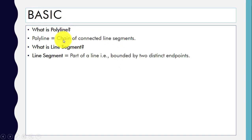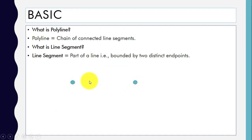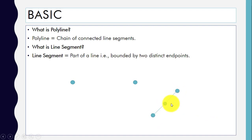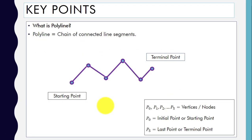First, what is a polyline? A polyline is a chain of connected line segments. A line segment is a part of a line bounded by two distinct endpoints. If we have two endpoints and join them, we can draw a line between them. A polyline is a chain of connected line segments — you can see here a line with two line segments.